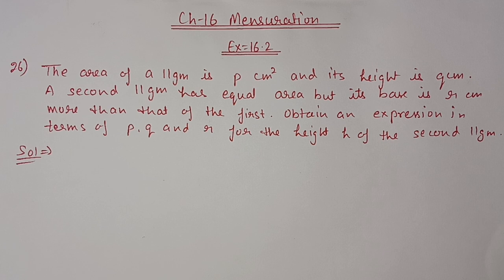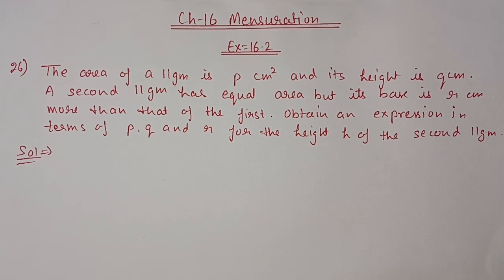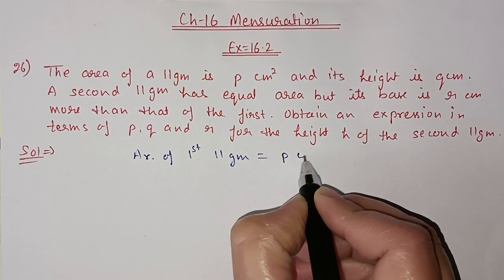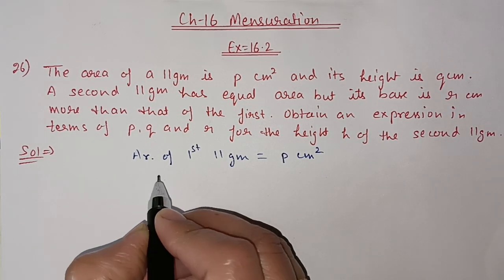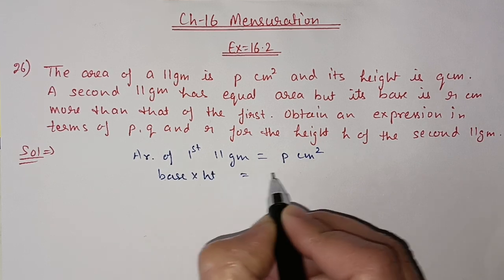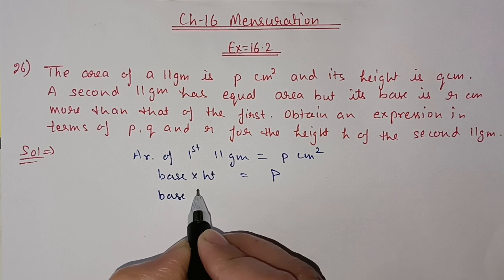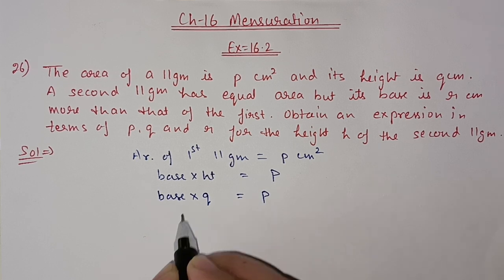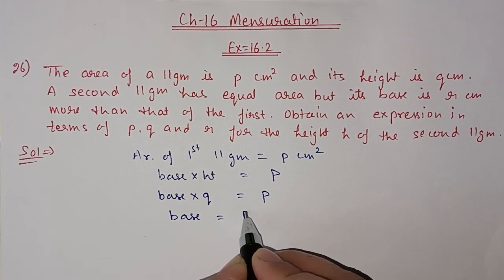Question: the area of a parallelogram is P centimeter square and its height is Q centimeter. A second parallelogram has equal area but its base is R centimeter more than that of the first. Obtain an expression in terms of P, Q, R for the height H of the second parallelogram. First, area of the first parallelogram is given equal to P centimeter square. Area of parallelogram is equal to base into height. Height is given as Q, so base of this first parallelogram is P upon Q.